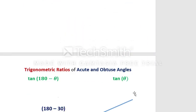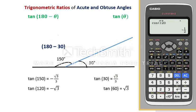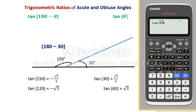Now see the comparison between tangent for acute and obtuse angles. Tangent 30 is √3/3. Tangent 150 is also √3/3 but with a negative sign. Tangent 60 and tangent 120: tangent 120 is −√3. So in cosine and tangent they have the same behavior — the tangent of an acute angle and the tangent of an obtuse angle have the same numerical value but there is a negative sign with the obtuse angle.